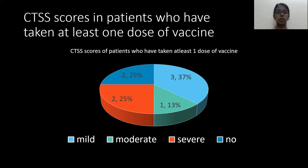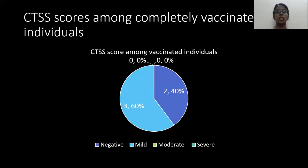Coming to the CTSS scores in patients who had taken at least one dose of the vaccine: majority of the patients, that is 37%, had mild disease, 25% had severe disease, another 25% did not have any findings on HRCT thorax, and 13% had moderate disease. Among completely vaccinated individuals, 60% of the patients had mild disease, whereas the rest had negative HRCT thorax reports.